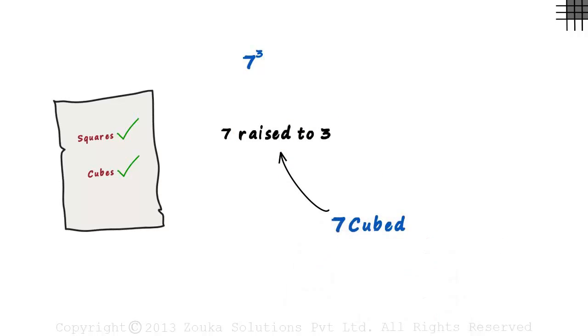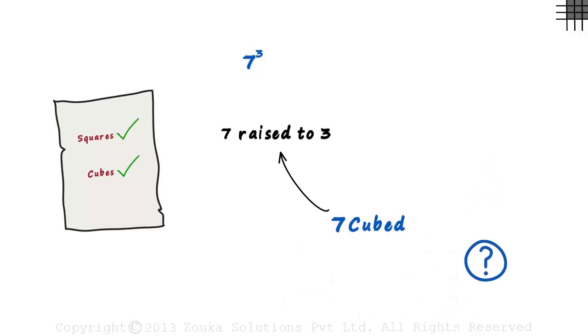Why do we have a distinct name for raised to 3? Well, it's the same reason as to why we have a distinct name for raised to 2 — it's because raised to 3 has many applications.